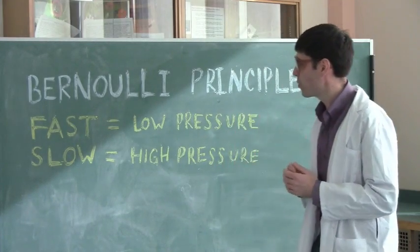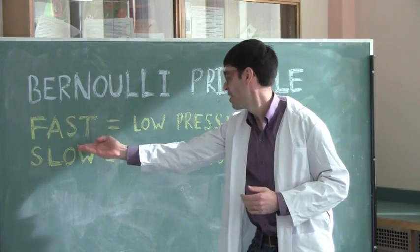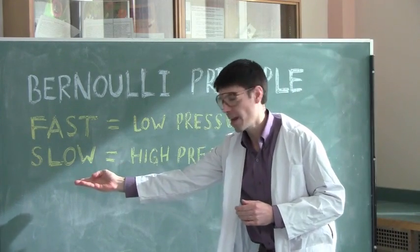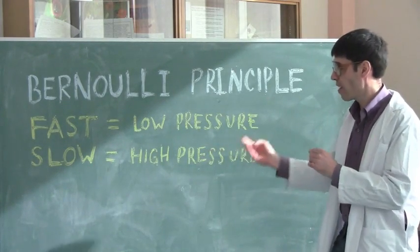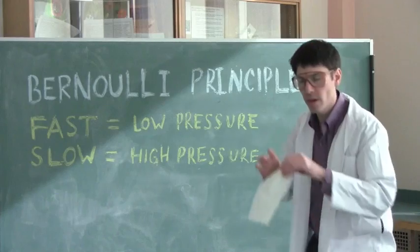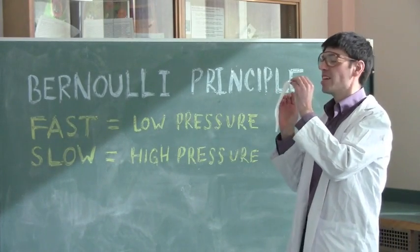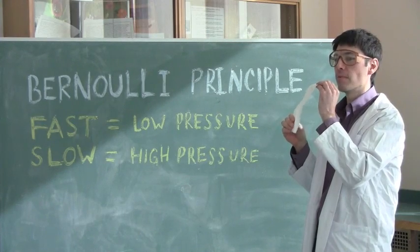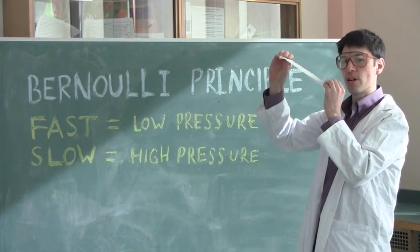What you have to remember is that when you have fast moving air, it generates a zone of low pressure. When you have slow moving air, it generates a zone of high pressure. So, when I blew across the paper, what happened is that I generated a zone of low pressure, causing the paper to rise from a high pressure zone to a low pressure zone.